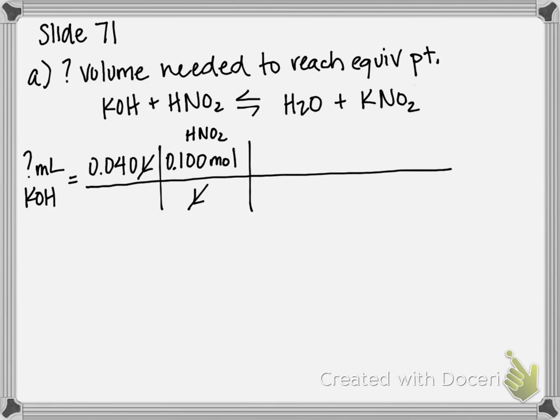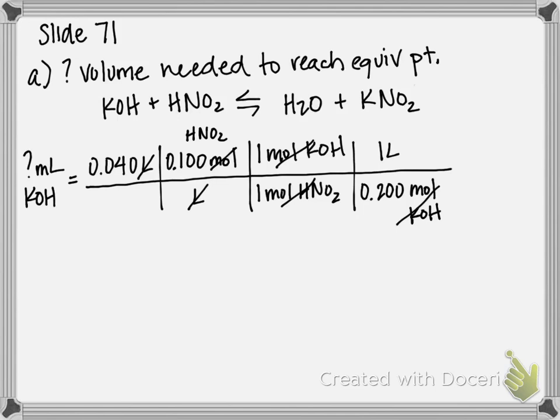So now at this point I've canceled out my volume, I'm in moles of nitrous acid, and I'm going to ultimately end up with volume of potassium hydroxide. So here's where I need to look at the stoichiometry of my equation and say that one mole of nitrous acid reacts with one mole of potassium hydroxide. So we don't have any coefficients written out in front of our equation. So that's going to cancel out moles of nitrous acid and I'm going to be left in moles of potassium hydroxide. Now final step is to basically use potassium hydroxide's molarity to figure out its volume. In the problem it says we titrate with 0.2 molar potassium hydroxide, so I'm going to divide by the molarity, and that's going to leave me in unit of volume.